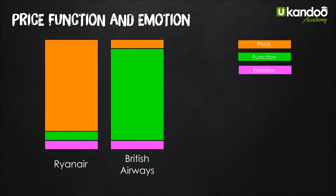Their functional promise was so strong that when they built Terminal 5 at London Heathrow and got it completely wrong — losing people's luggage all over the place — a TripAdvisor survey a couple of weeks after it opened found that over 50% of people said British Airways could in no way be to blame, even though it was entirely their fault. That's the strength of a functional promise, but it doesn't allow for really premium or really cheap pricing.